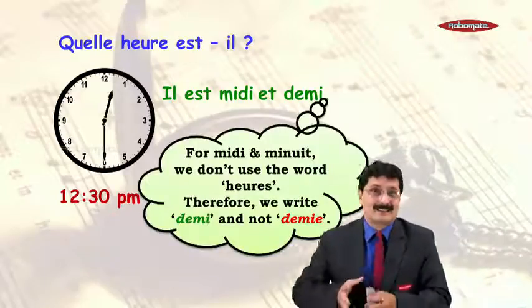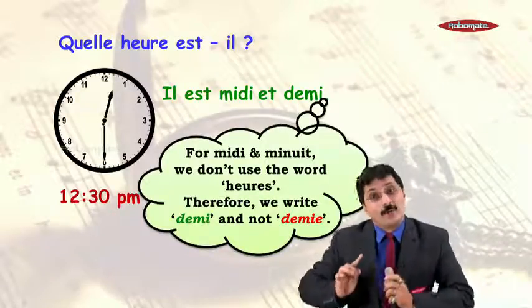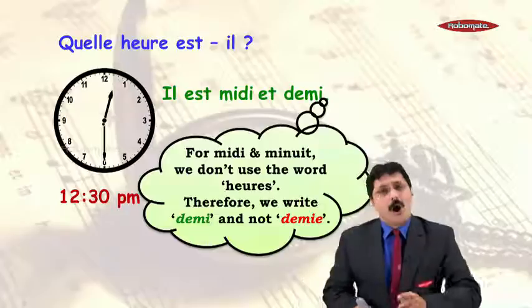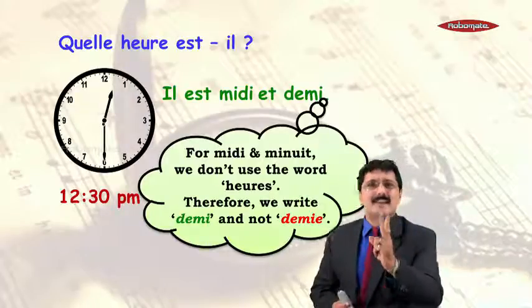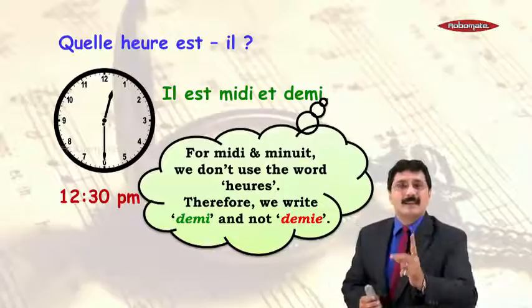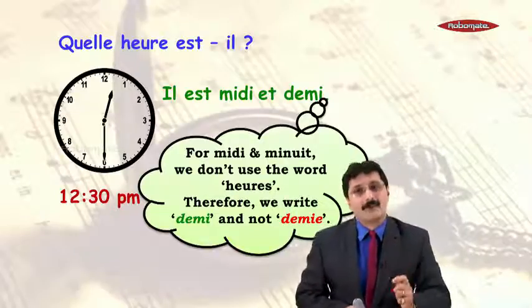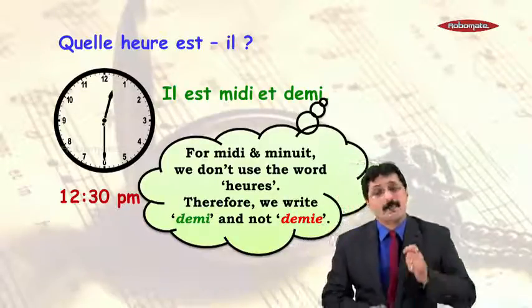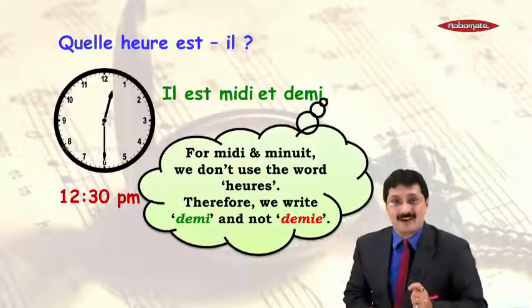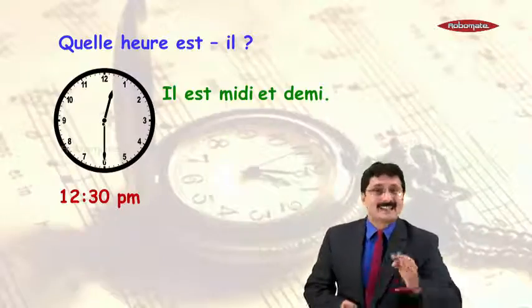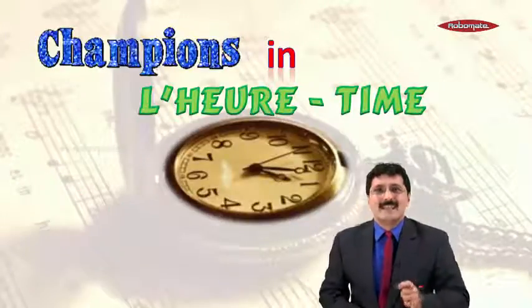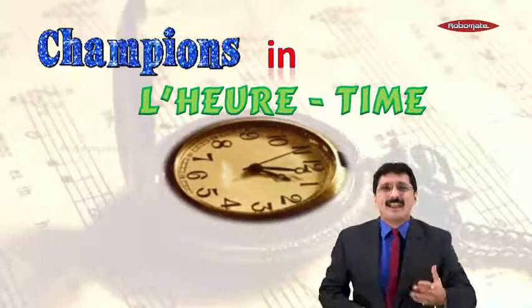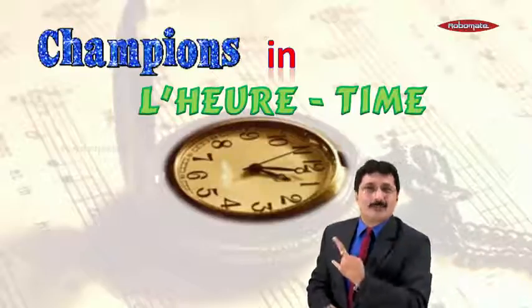You should remember that 'demi' adds an 'e' only when it is with a feminine noun. Midi is a masculine noun. Only for these two timings — 'il est midi et demi' and 'il est minuit et demi' — will 'demi' be without the 'e'. Otherwise, for any other time with 'demi', it will always have an 'e' because of the word 'heures'. So our answer is 'il est midi et demi'. You and I together — we are champions in time! God bless you, my friends.